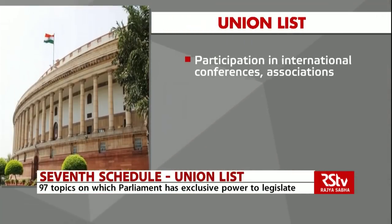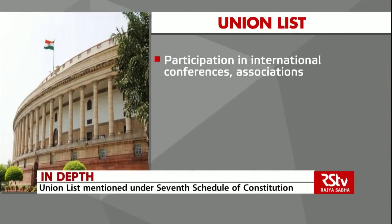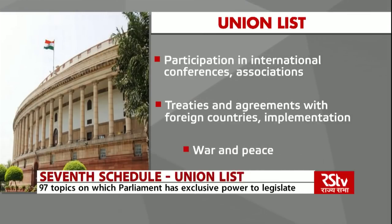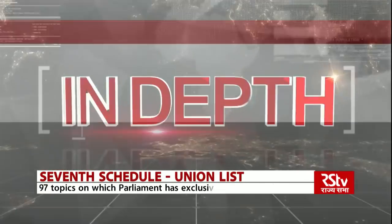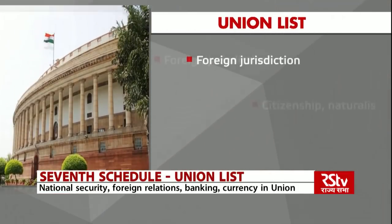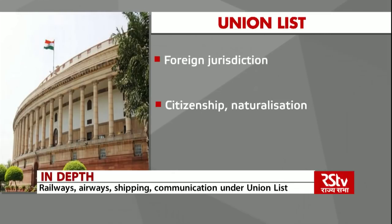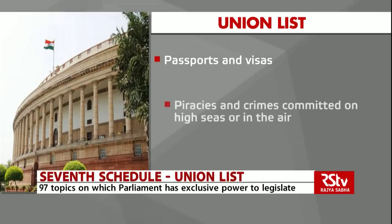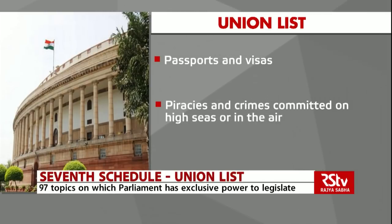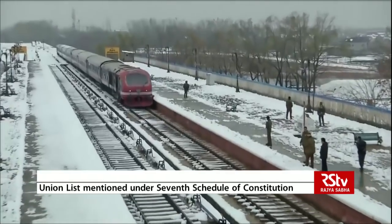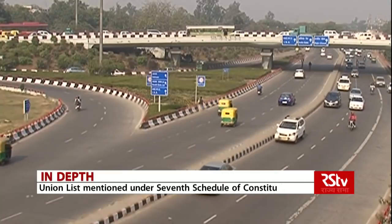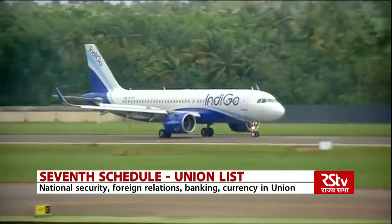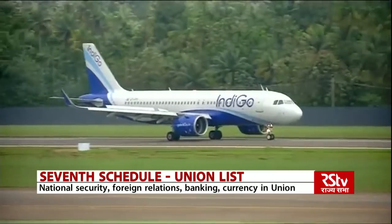Participation in international conferences, associations and other bodies. Entering into treaties and agreements with foreign countries and their implementation. War and peace, foreign jurisdiction, citizenship, naturalisation and aliens, extradition, passports and visas, piracies and crimes committed on the high seas or in the air. Transportation including railways, national highways, shipping and navigation on national waterways, ports and port authorities. Airways and aerodromes are included in the union list.